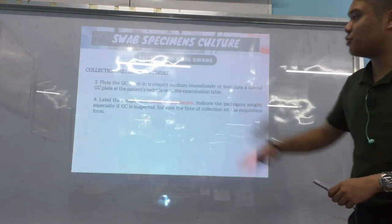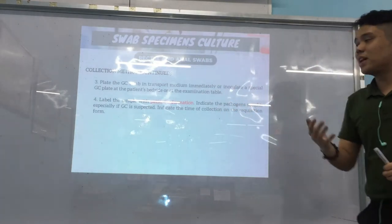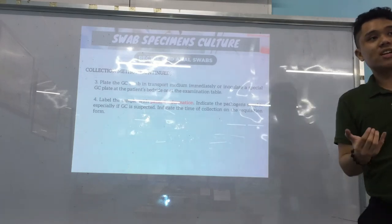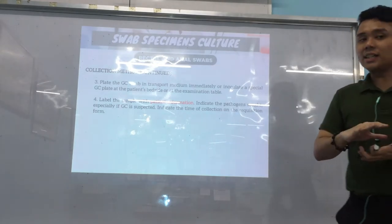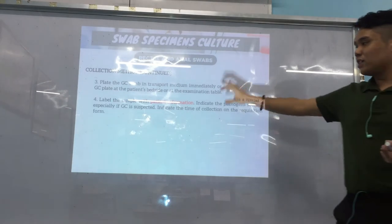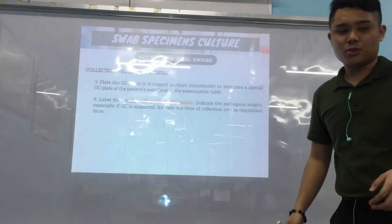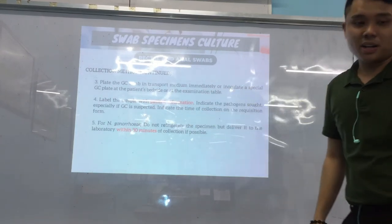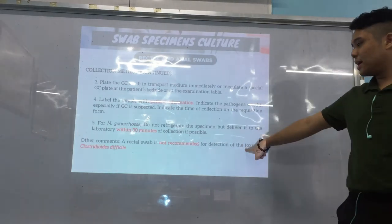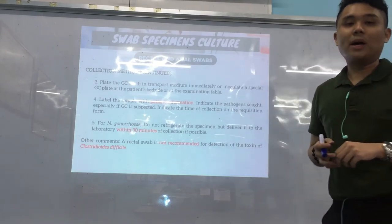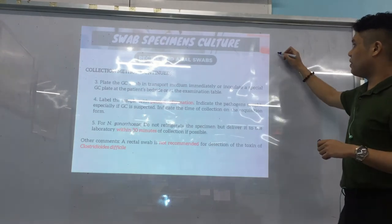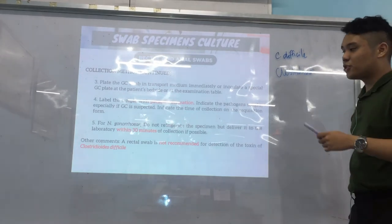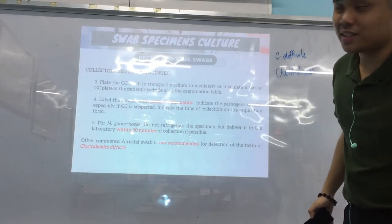For gonococcal collection, plate immediately bedside if possible; if not, place in proper transport medium, since N. gonorrhoeae is very sensitive to temperature and pH changes. Label the sample with patient information, indicate the suspected pathogen, and record the time of collection. For N. gonorrhoeae, do not refrigerate — deliver to the lab within 30 minutes of collection if possible. For detecting Clostridioides difficile toxin (formerly Clostridium difficile), do not use rectal swab — use stool itself.